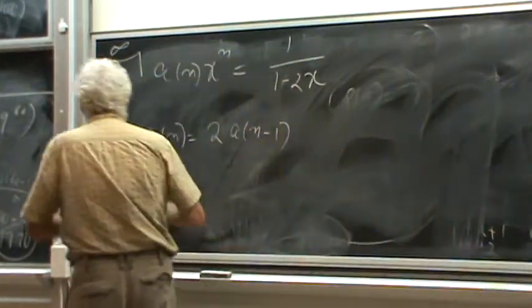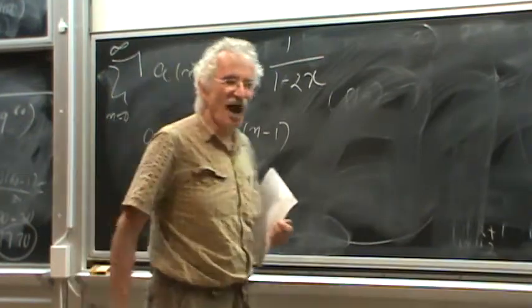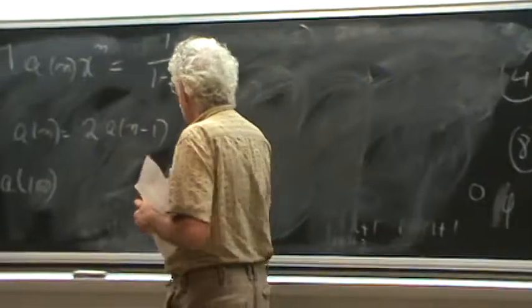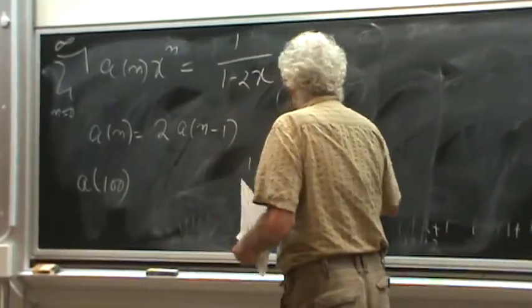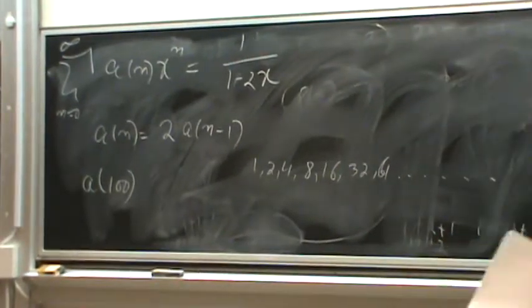And here you want to find 2 to the power of 100. And you are stupid. You first find a of 1, then a of 2, then multiply by 2. 1, 2, 4, 8, 16, 32, 64. And after 100 steps, you get it.